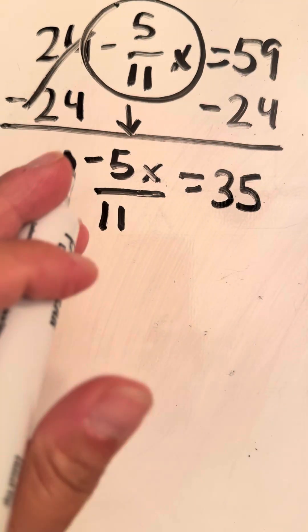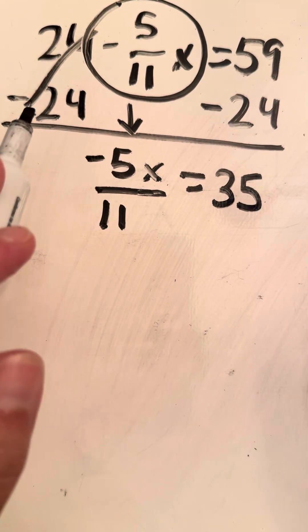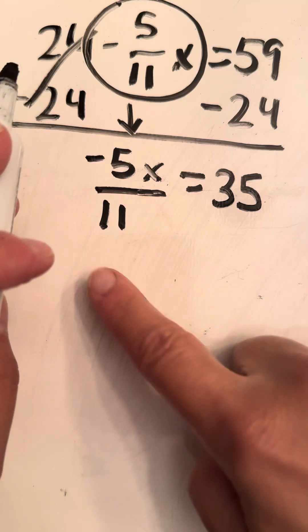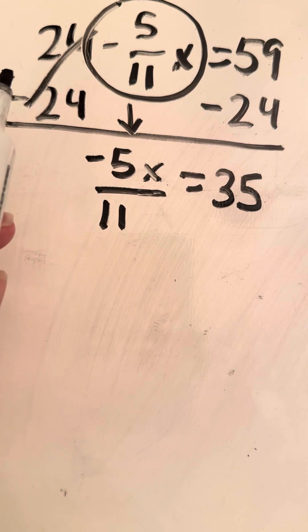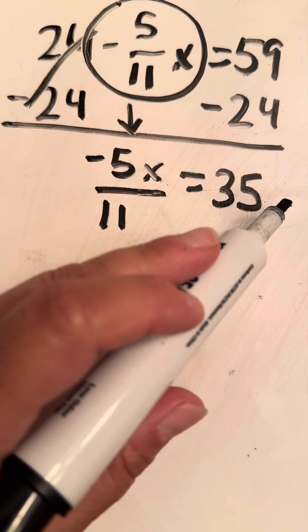Okay, so if I wanted to do this in two steps, there's step one. Step two, you multiply this by its reciprocal, which would be 11 over negative 5. And if you do that there, you do it over here.